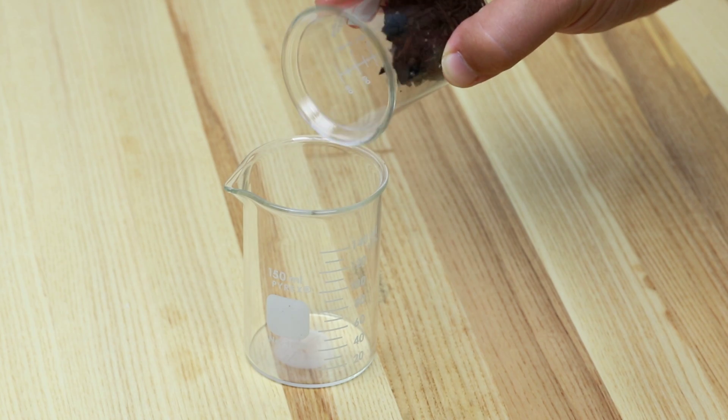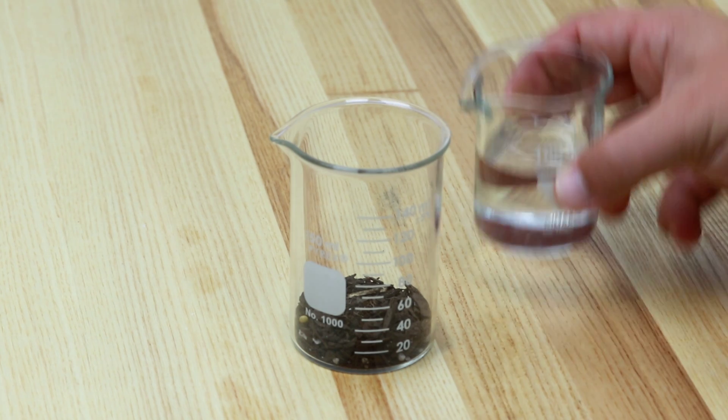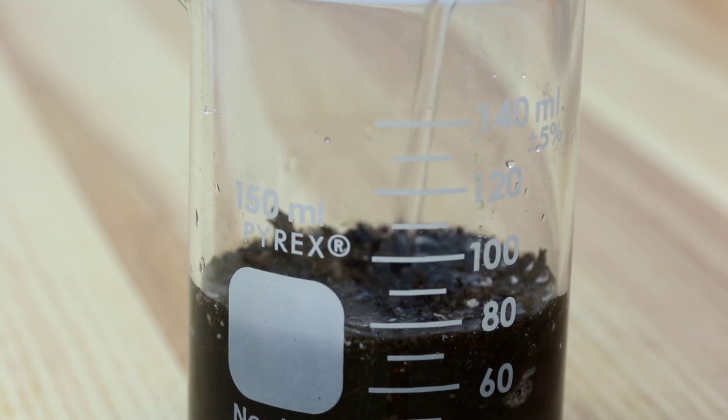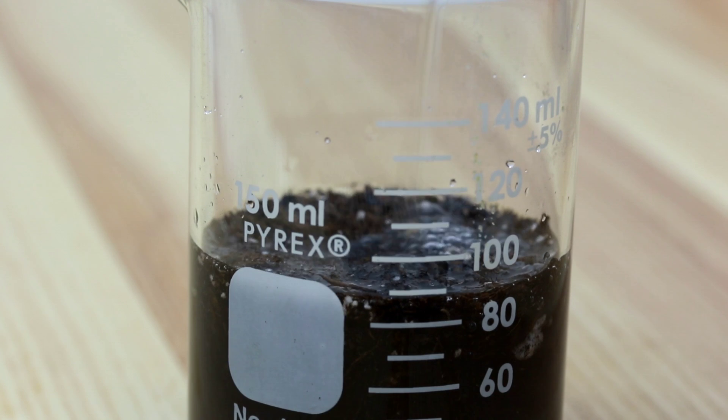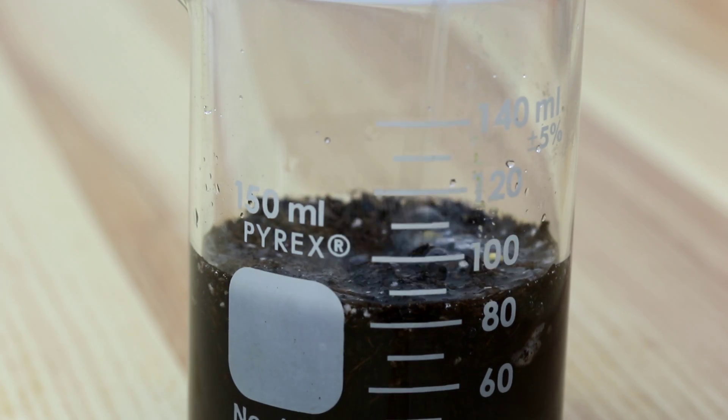First, put your soil into the container. Next, add your distilled water. The correct proportions of a soil slurry are one part soil and two parts water. Be sure to use enough sample to fully immerse your electrode.